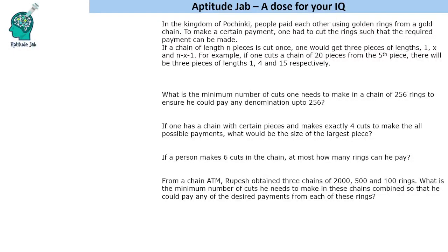Hello everyone, welcome to Aptitude Jab. This is an interesting number puzzle, also called a chain-breaking problem. Let's understand the logic of these questions. In a kingdom, people paid using gold rings from a gold chain. To make a certain payment, one had to cut the rings such that the required payment can be made. When you cut a ring, you get three pieces out of it.